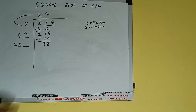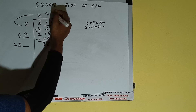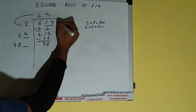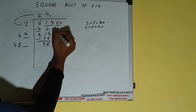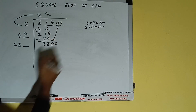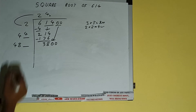Write it here and keep one digit extra. This number we need to make it big, but we don't have more pairs so we'll put a decimal. Once we put the decimal we can bring a pair of zeros down and it will be 3800.